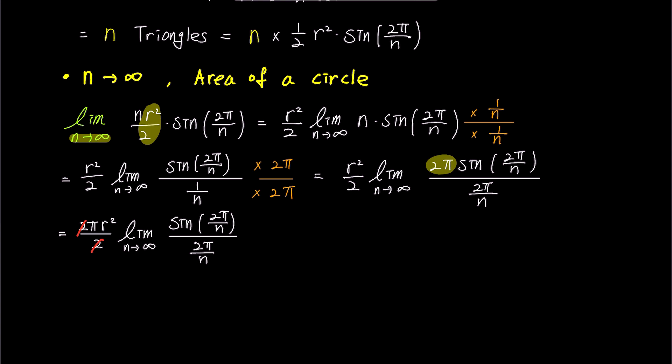Hence, the expression becomes π times r squared times limit of sin 2π over n over 2π over n. Now, let's substitute 2π over n with theta. As n approaches infinity, theta approaches 0 due to the denominator n approaching infinity. Rewriting the expression with this substitution,